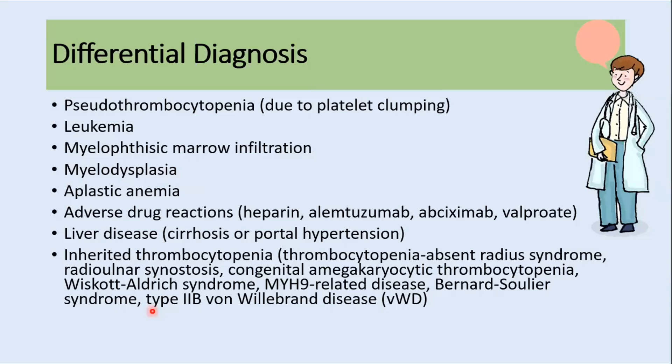The major differential diagnoses for ITP include all other causes of low platelet count. Common differentials include pseudothrombocytopenia due to platelet clumping, leukemia, myelophthisic marrow infiltration, myelodysplasia, aplastic anemia, adverse drug reactions such as heparin or valproate, liver diseases like cirrhosis or portal hypertension, and inherited thrombocytopenia.